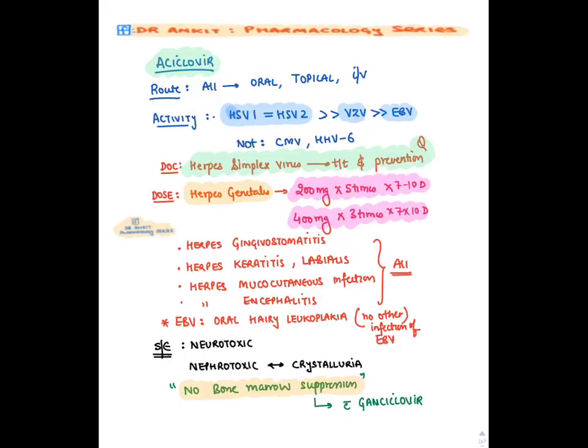Acyclovir is an oral prodrug and the drug of choice for Herpes Simplex Virus; it is given five times a day. Its side effects are neurotoxicity and nephrotoxicity, but importantly it does NOT cause bone marrow suppression. Bone marrow suppression is the main side effect of Ganciclovir.